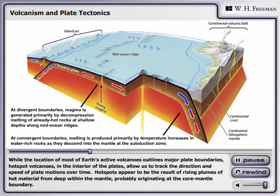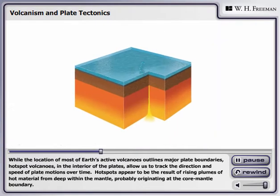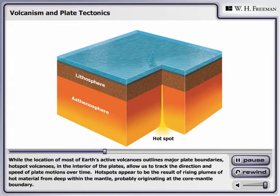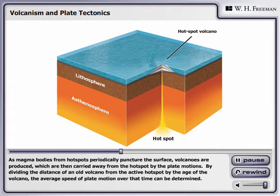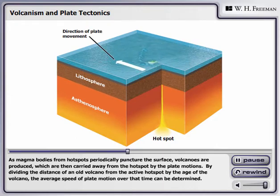While the location of most of Earth's active volcanoes outlines major plate boundaries, hot spot volcanoes in the interior of the plates allow us to track the direction and speed of plate motions over time. Hot spots appear to be the result of rising plumes of hot material from deep within the mantle, probably originating at the core-mantle boundary. As magma bodies from hot spots periodically puncture the surface, volcanoes are produced, which are then carried away from the hot spot by the plate motions.